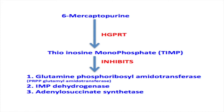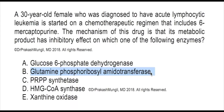TIMP also has an inhibitory effect on two other enzymes in purine nucleotide biosynthesis. First is IMP dehydrogenase (inosine monophosphate dehydrogenase), which converts IMP to XMP, and XMP later to GMP. Second, TIMP also inhibits adenylosuccinate synthetase, which converts IMP to AMPS and then to AMP. Overall, TIMP has inhibitory effects on three enzymes: glutamine phosphoribosyl amidotransferase, IMP dehydrogenase, and adenylosuccinate synthetase.